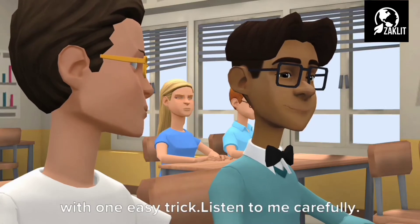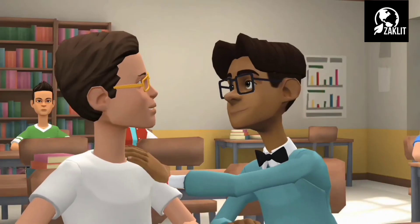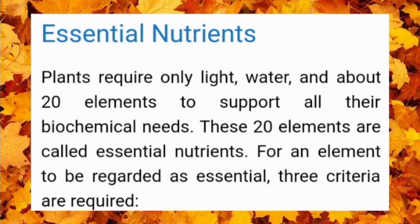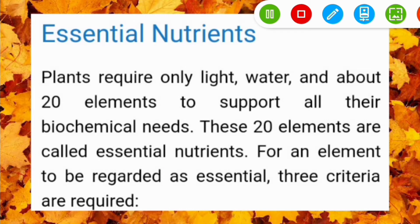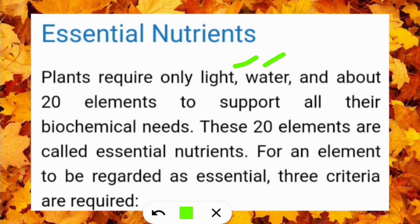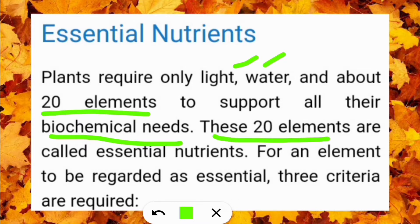Now listen to me carefully. First of all, let's know what are essential nutrients for plants. Plants require light, water and about 20 elements found in the nature to support all their biochemical needs. Those biochemical needs can be growth, reproduction and nutrition. These elements, which are 20 in number, are called essential nutrients.